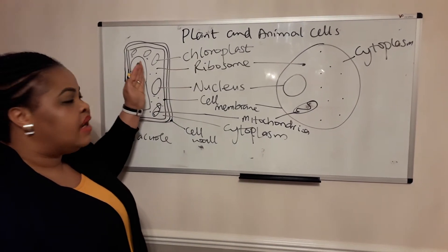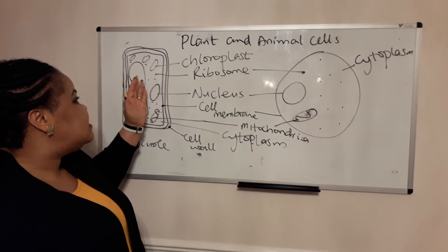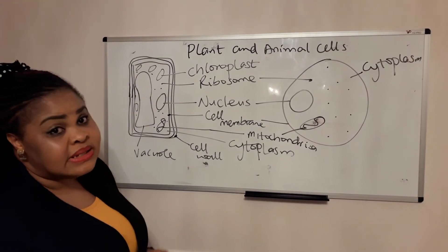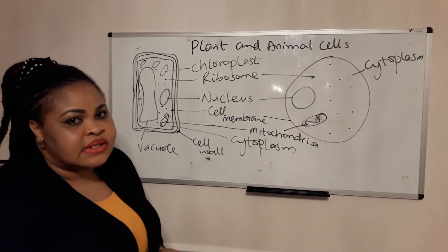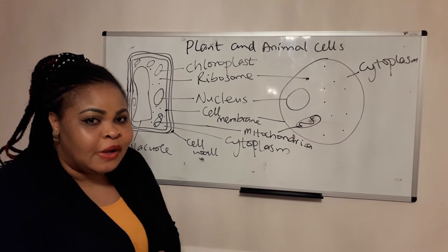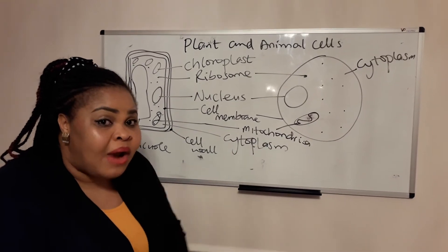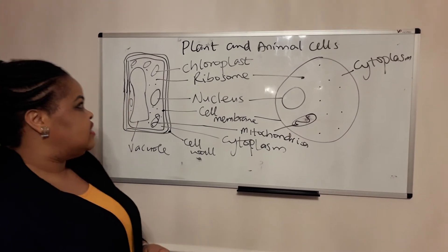Chloroplasts are very important in plant cells. Now when you find a cell that has a lot of chloroplasts, it means it photosynthesizes because it contains chlorophyll, which actually traps sunlight for photosynthesis.